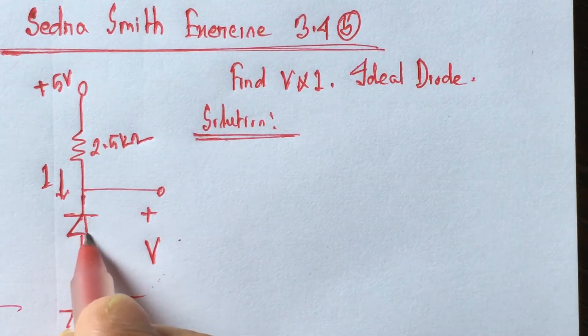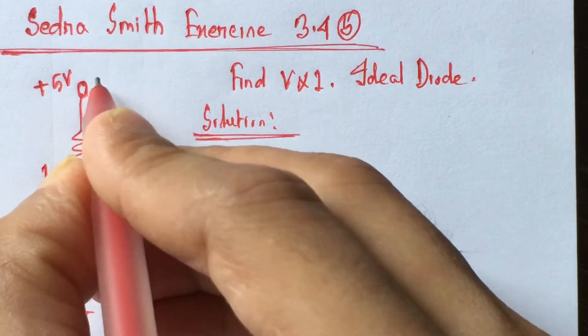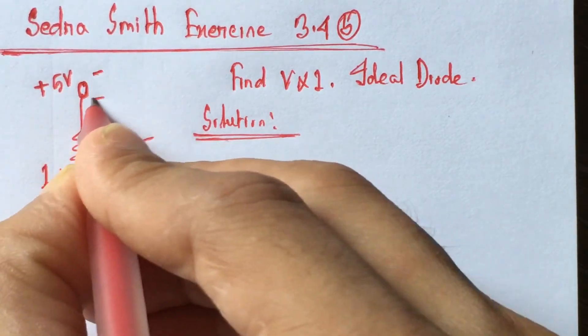Now, from the circuit we see that this is the positive end of diode and this is the negative end. This is the plus 5 volt. That means this is the negative end and this is the positive end.